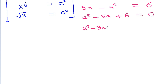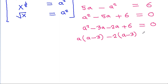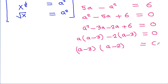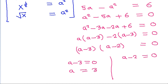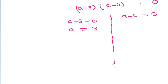Factoring a squared minus 5a plus 6 equals 0, we split as minus 3a minus 2a, giving (a minus 3)(a minus 2) equals 0. So a equals 3 or a equals 2. Since a is the 4th root of x, we have the 4th root of x equal to 3.